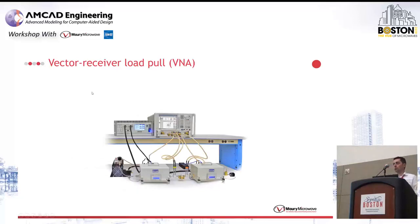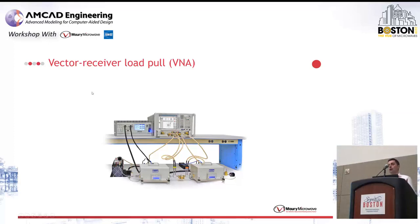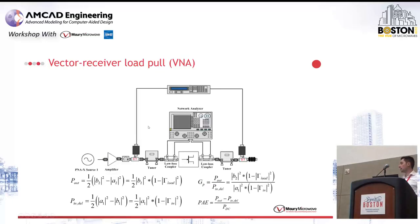Probably the most accurate way for doing load pull measurements today is vector receiver load pull. The main difference is that instead of power meters, you use vector network analyzers to measure A and B waves. Between your device under test and your tuners you have couplers — that's why we call it vector receiver — because you sample the A and B waves coming in and out of the DUT and measure them with the VNA. You rely on full two-port calibration to de-embed your measurements, and powers are calculated from the A and B waves according to the standard equation.